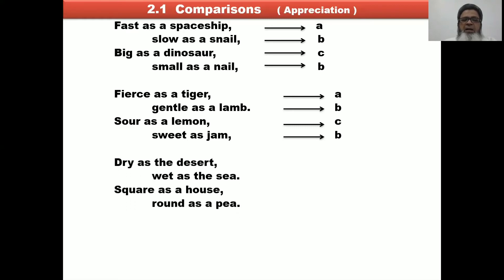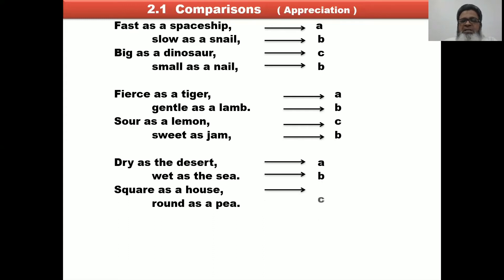Third stanza: 'Dry as a desert' — first line, label A. 'Wet as a sea' — label B. 'Square as a house' — sound changes, label C. 'Round as a pea' — rhymes with 'sea,' so label B. Same sound pattern. The rhyme scheme is A, B, C, B.